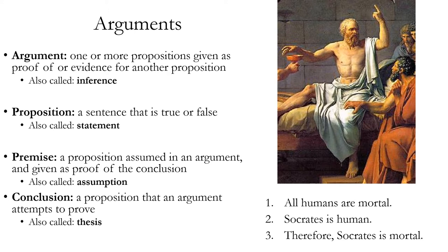What an argument is trying to do is prove one of the propositions. The proposition that the argument is trying to prove is called the conclusion — it can also be called a thesis. The other proposition or propositions in an argument are the premises: those are the propositions given as proof of or evidence for the conclusion. Premises can also be called assumptions because they're things you assume as true in order to prove the conclusion. In this example, the conclusion is 'Socrates is mortal,' and the premises are 'all humans are mortal' and 'Socrates is human.'